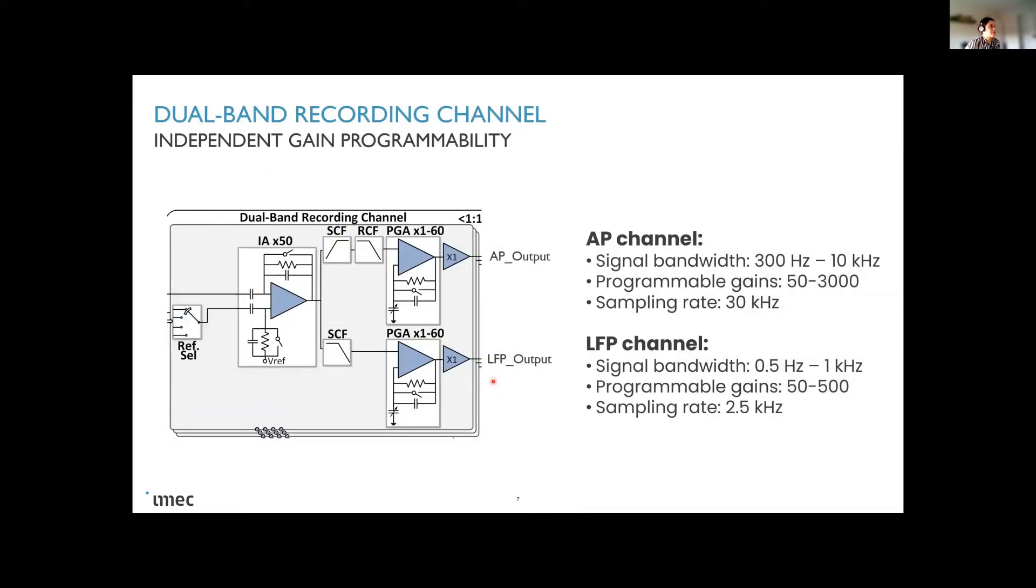Here you have some details of what we call the dual band recording channel. Basically what we do here with this dual band is to separate the AP signals from 300 hertz to 10 kilohertz. This filter is done on chip, it's a first order filter. So for the people that need better filtering, it's better to apply additional filtering outside of the chip in the digital domain. And the local field potential filter is from 0.5 hertz up to 1 kilohertz. And here the sampling rate is a little bit lower for the LFP channel.